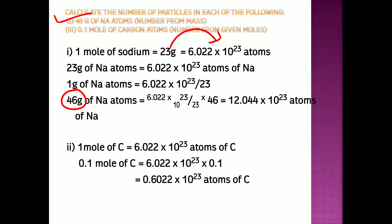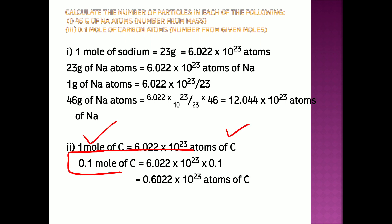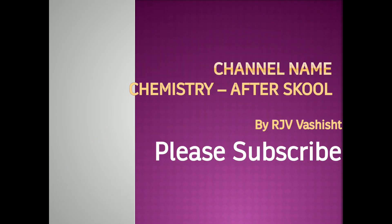How many particles are present in 0.1 mole of carbon atoms? We know 1 mole of carbon = 6.022 × 10²³ atoms. So 0.1 moles = 6.022 × 10²³ × 0.1 = 0.6022 × 10²³ atoms of carbon. I hope you have understood all these numericals. Please practice — you can watch this video again to understand different numericals of the mole concept. Thank you so much.